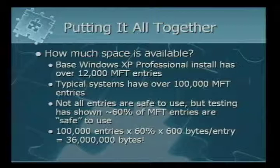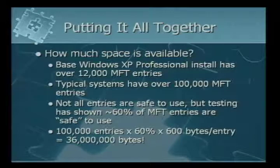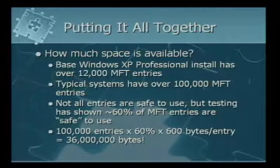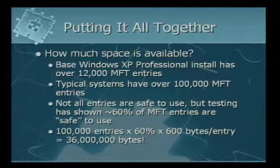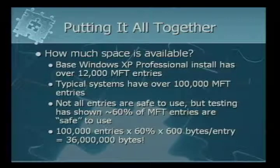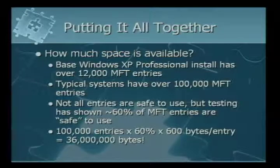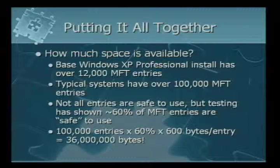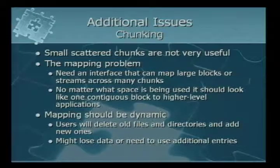How much can we actually store? A base Windows XP professional install has 12,000 MFT entries. Most systems have at least 100,000 — Irby's laptop has 230,000 MFT entries. Using our metrics, about 60% of MFT entries we'd consider safe. With approximately 600 bytes of slack space per entry and 100,000 entries at 60% safe, that gives us 36 megabytes of hidden storage on an average NTFS drive. That's a lot of storage for something that most people can't see.